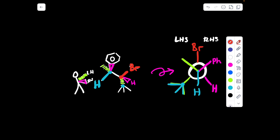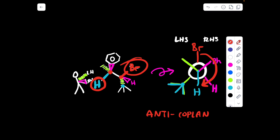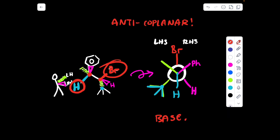The orientation of the H that we want to eliminate on the beta carbon and the leaving group must be 180 degrees away from one another. Right now, they are already 180 degrees away from one another, so they are already in the antiperiplanar orientation. That means the base is going to come in and extract this hydrogen via two in, two over, two out.